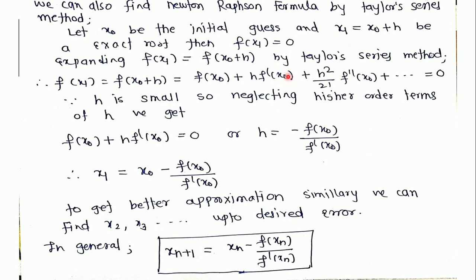We can also find the Newton-Raphson formula by the Taylor series method. Let x0 be our initial guess and x1 equals x0 plus h be the exact root. Here h is a very small value. It may be positive or negative depending upon the initial guess.